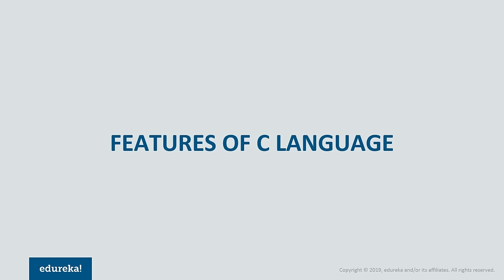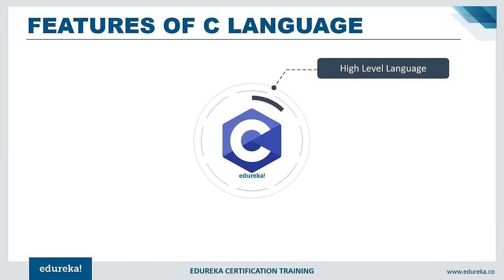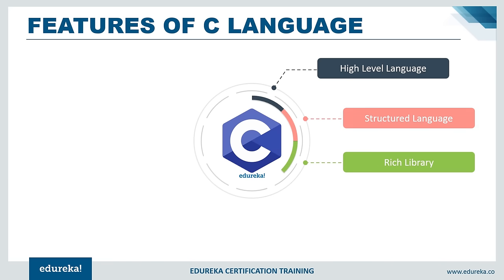Now we shall discuss the features of C programming language. The first feature is that it is a high-level programming language — any language written in English or user-readable format qualifies. The next feature is structured language: C is considered a structured programming language as it improves clarity, quality, and reduces development time.